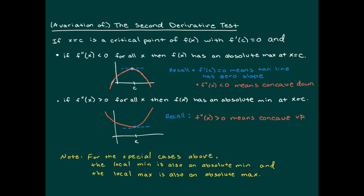Another approach is a variation of the first derivative test. If you establish a critical point where the first derivative equals zero, and you show the first derivative is positive before c and negative after c for all x, then the local max is also an absolute max. Similarly, if the first derivative is negative before c and positive after c, that gives an absolute min. Either variation — first or second derivative — gives the same result: local and absolute extrema coincide.